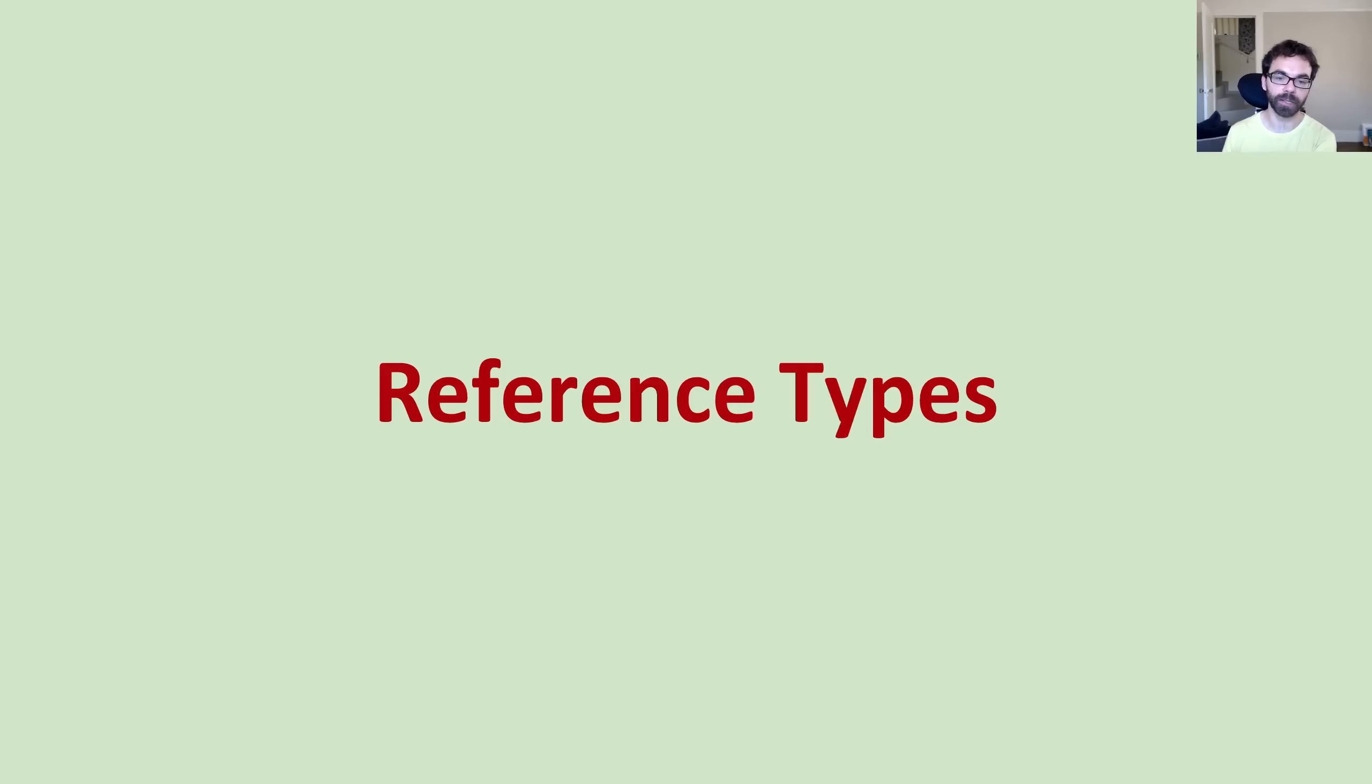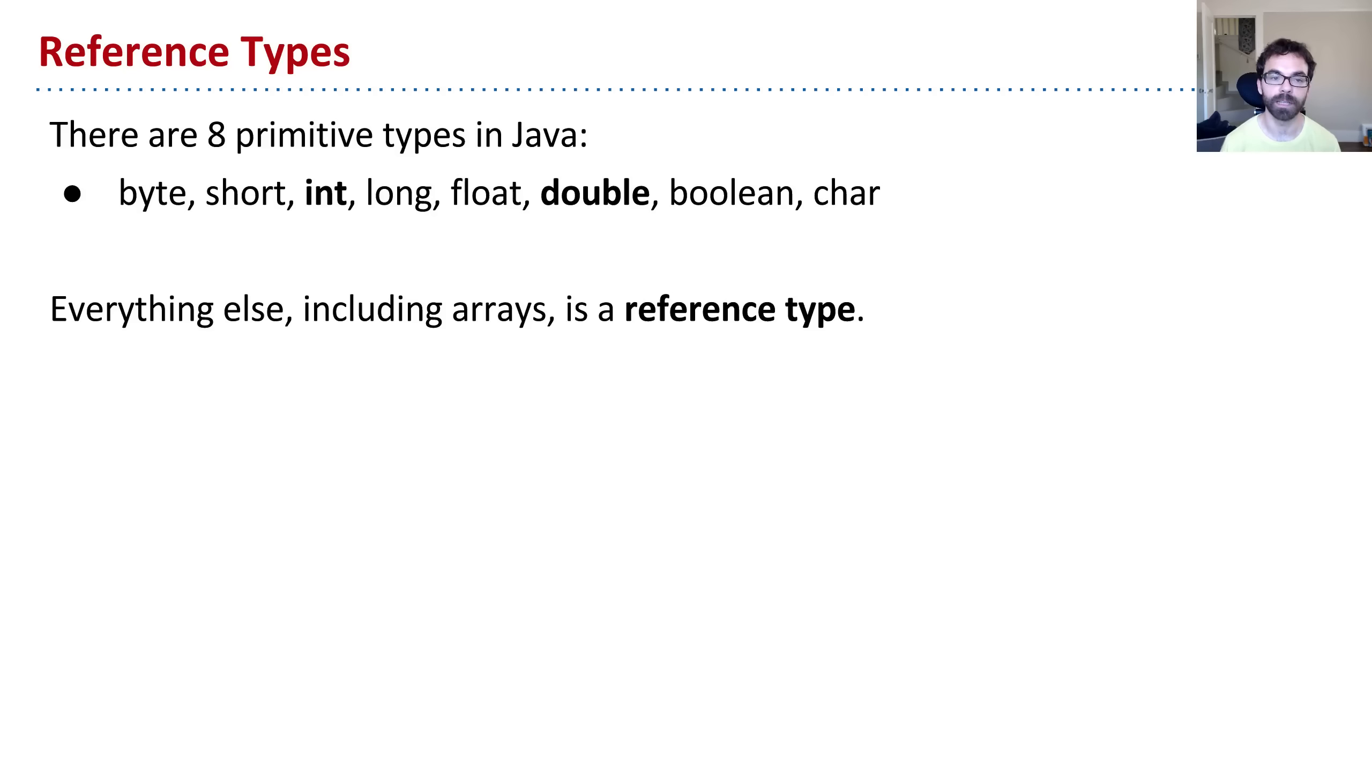So we've covered the right half of the puzzle, primitive types. Now what we're going to do is turn over to the left half of the walrus mystery, how the walrus behaves, by talking about so-called reference types.